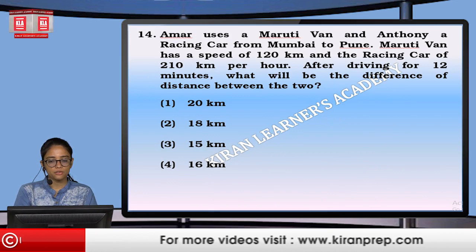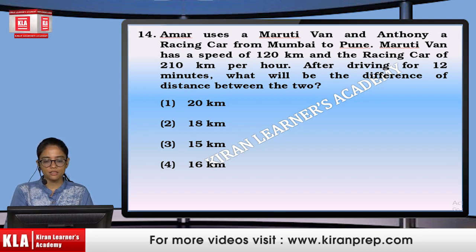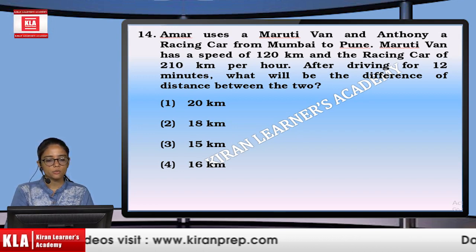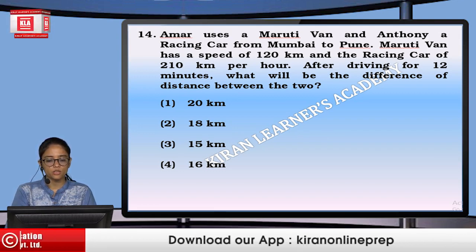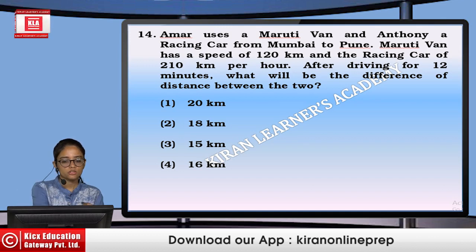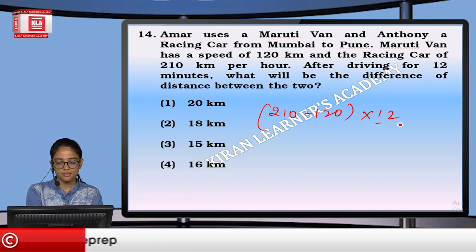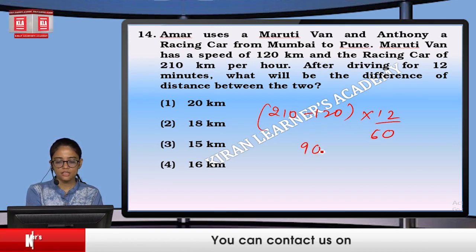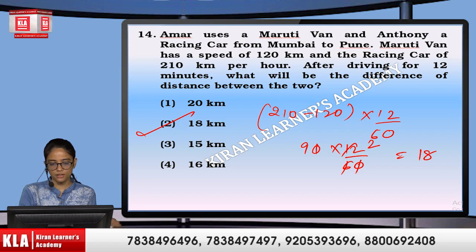Amar uses a Maruti van and Anthony a racing car from Mumbai to Pune. The Maruti van has a speed of 120 km/h and the racing car is also 120 km/h. After driving for 12 minutes, what is the difference between the two? Since they move in the same direction, the relative speed difference times 12/60 gives 90 × 12/60 — that is 18 km. Option number 2.